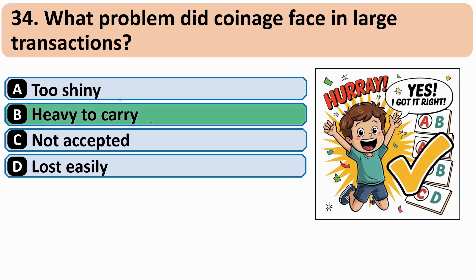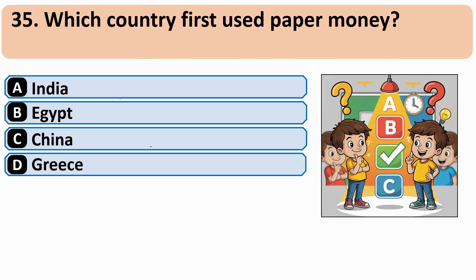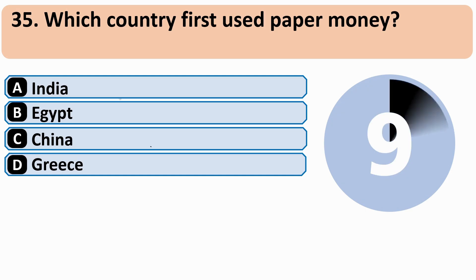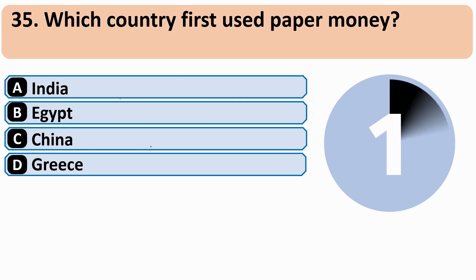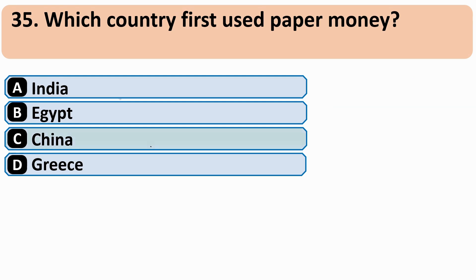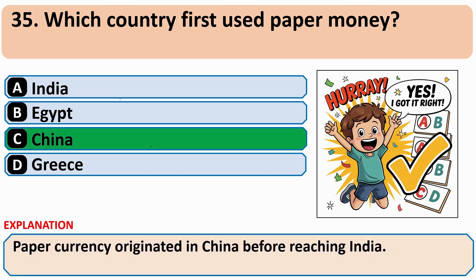Which country first used paper money? The correct answer is C — China.